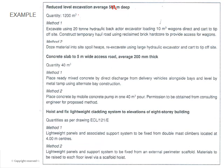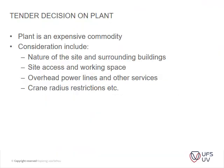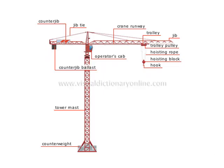You can have one method or an alternative method and compare the pros and cons for costs. The tender decision on plant is important — plant is an expensive commodity. You need to consider the nature of the site, surrounding buildings, site access, working space, overhead power lines, other services, and crane radii.